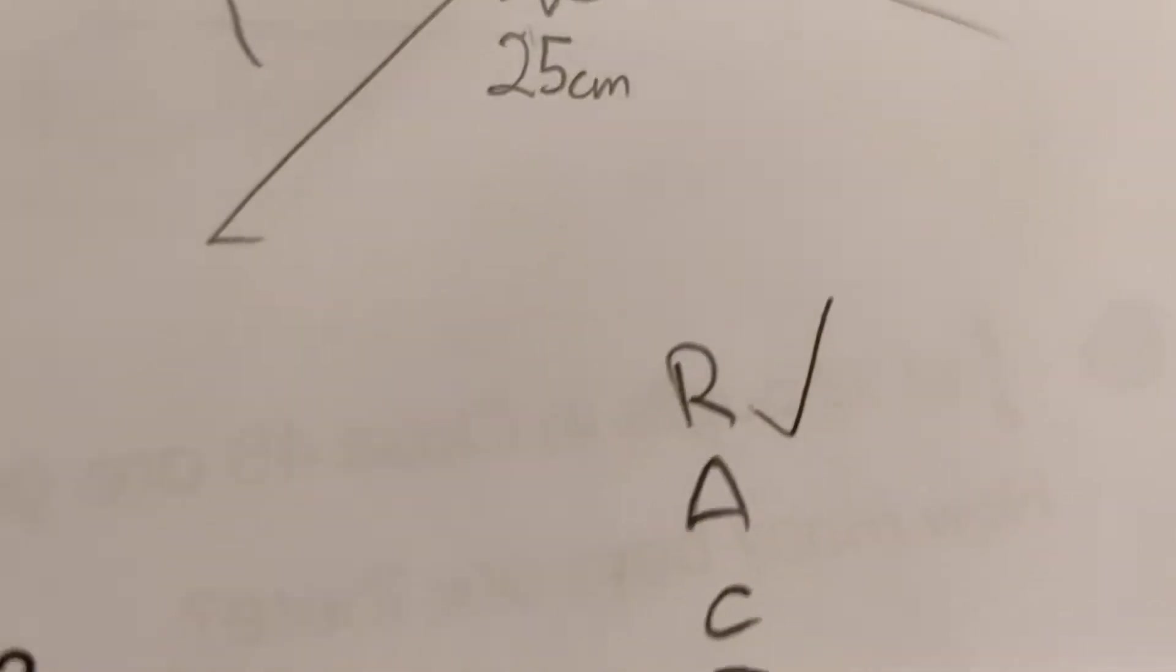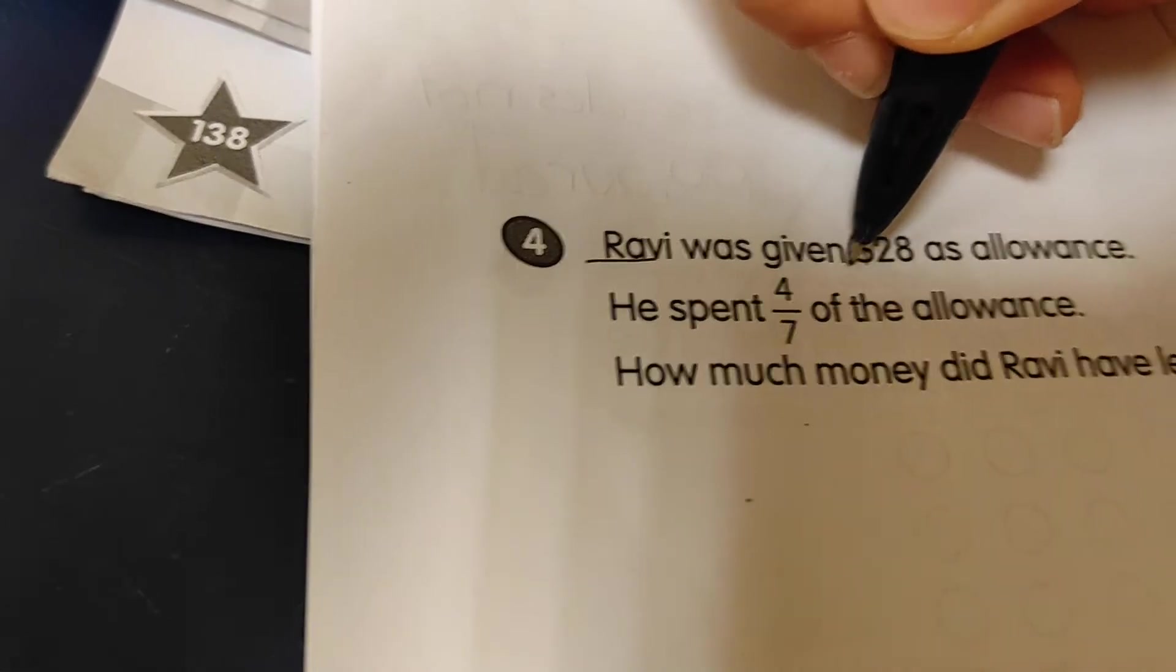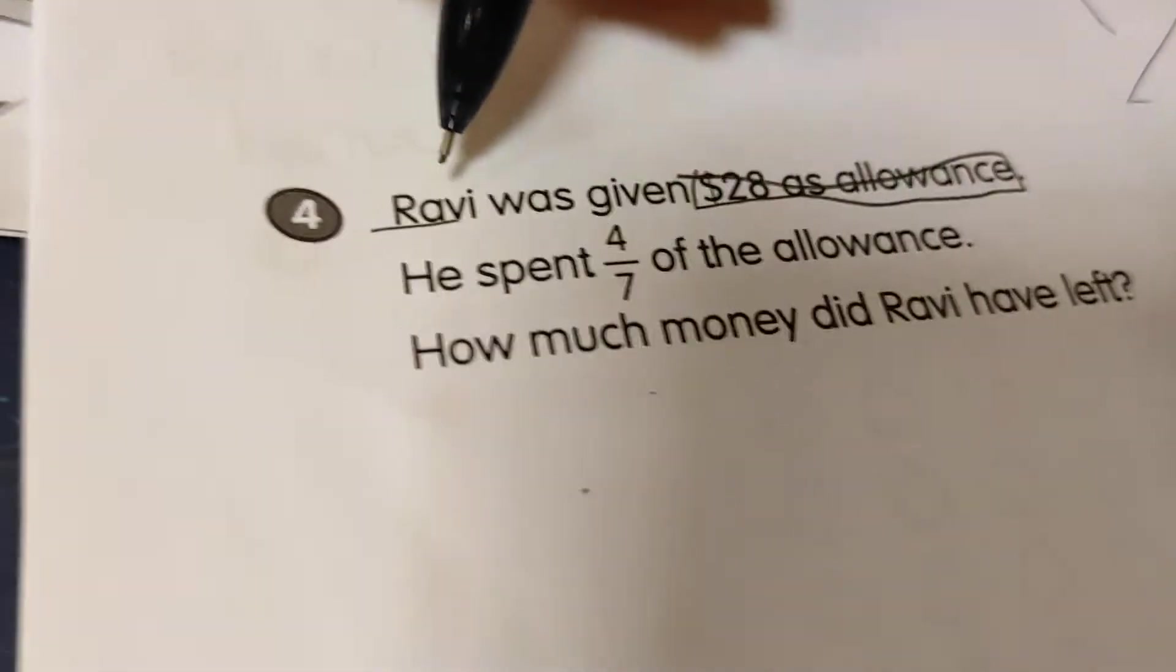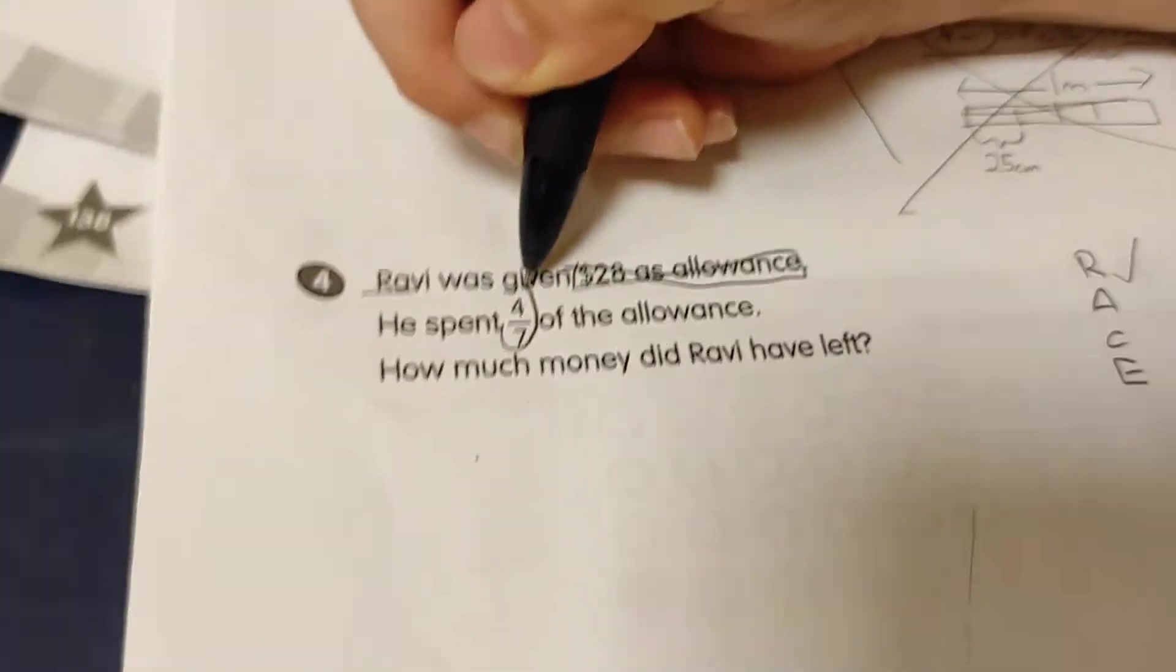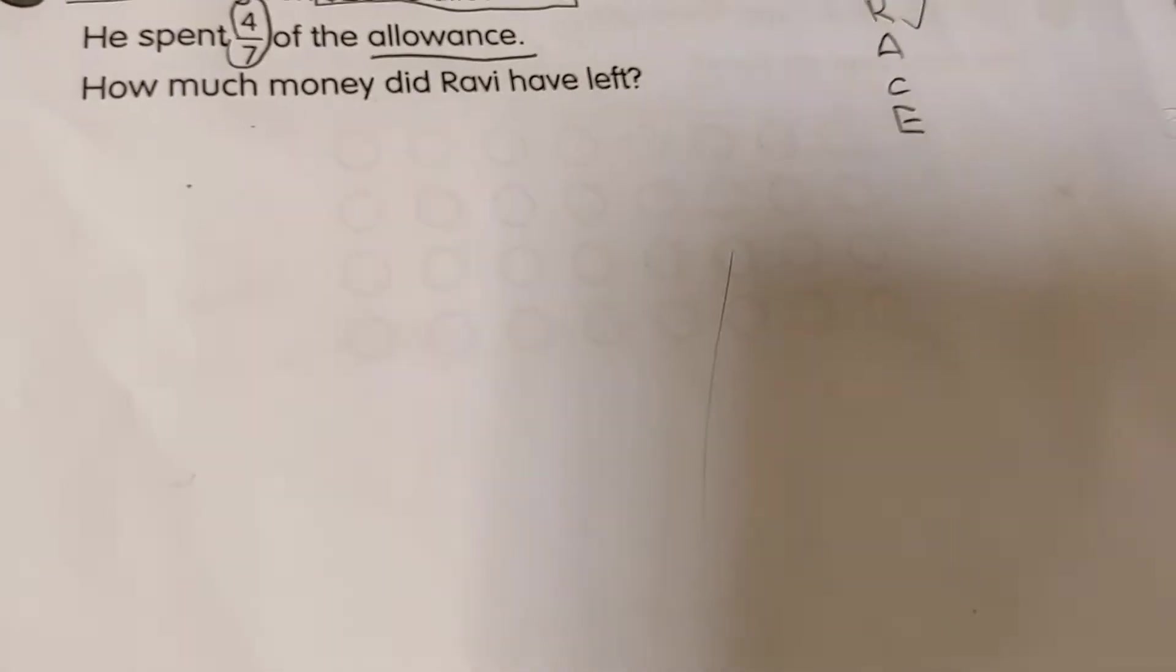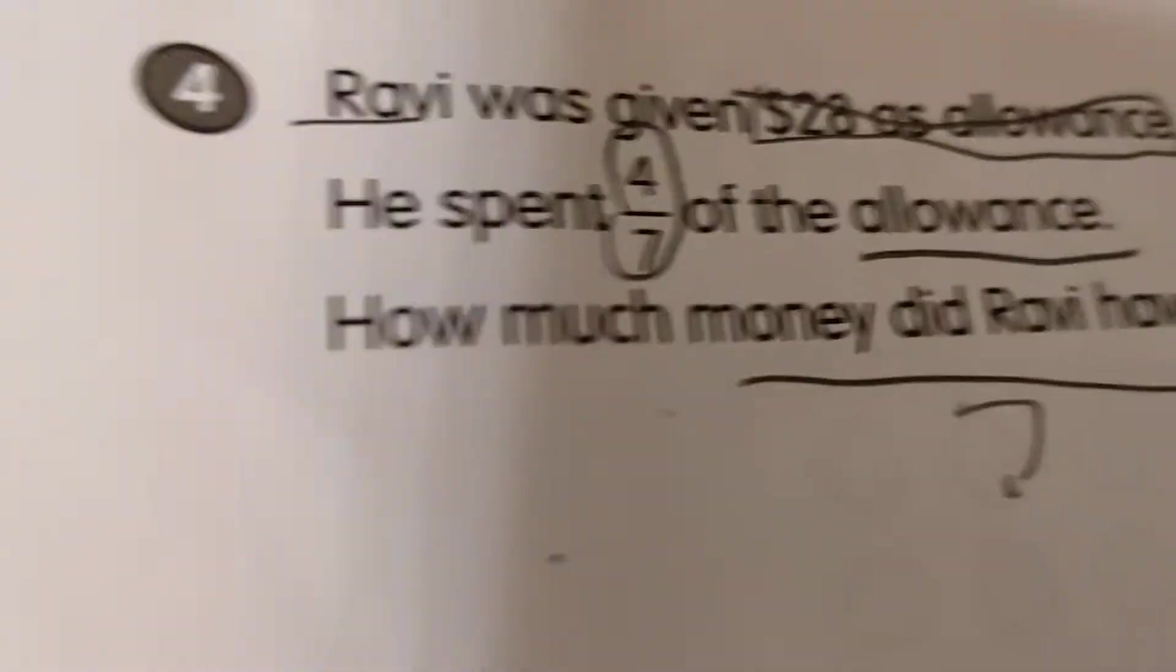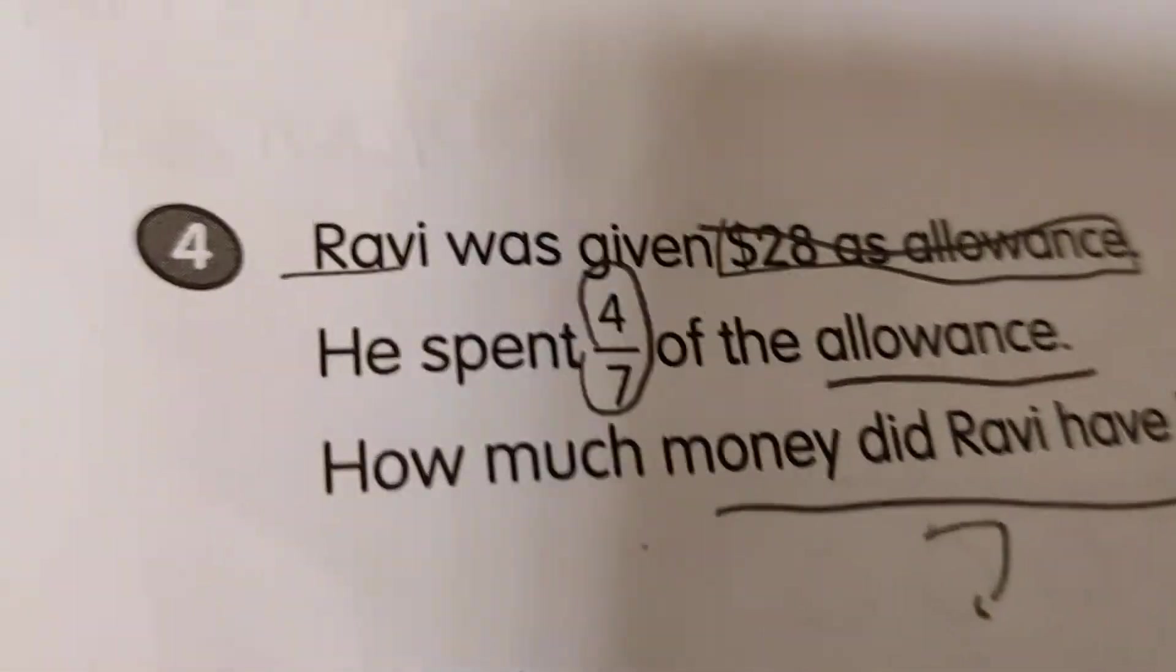Second, since we have read, let's put the tick at R. Okay, second. A. A stands for annotate. Ravi was given $28 as allowance. Let's read it again so we can annotate too. Spent 4 out of 7 of the allowance. How much money did Ravi have left? Okay, since now we have done annotating, let's put the tick at A.